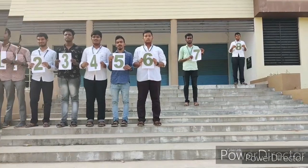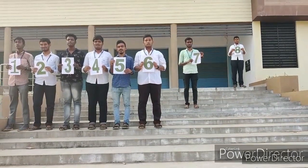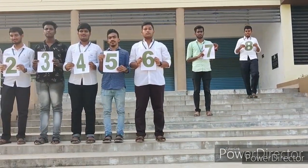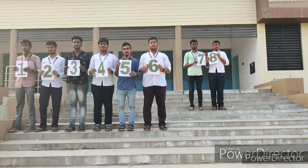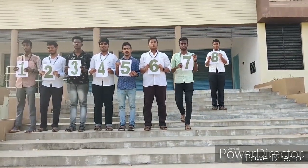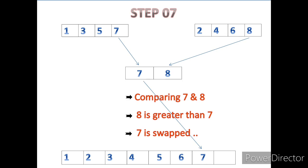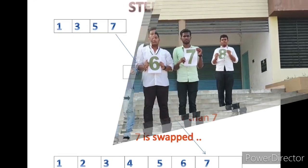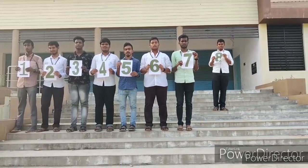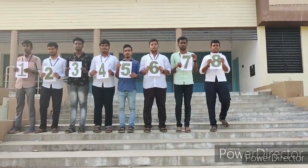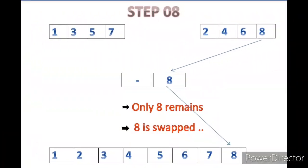Seven remains in the array; eight is compared with seven. Seven is lesser than eight, so it is swapped — that is step seven. Finally, eight only remains in the array, so it is swapped. That is step eight. Thank you.